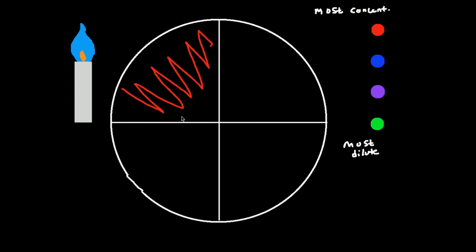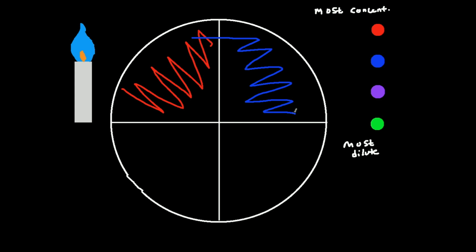Now I'm going to stick my loop back in the flame and sterilize it again. Then what I'm going to do is drag my loop through a small portion of where I streaked in the previous quadrant — just through a small part, not a big part — and then zigzag in the next quadrant like that.